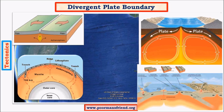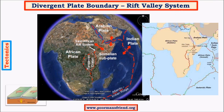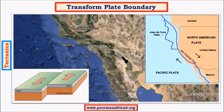We have discussed the divergent plate boundary and the formation of the African Rift Valley, in which the first stage is upwarping, then the formation of a rift, then a linear sea, and finally a mighty ocean. This is a quick recap of the previous video. The transform plate boundary's best example is the San Andreas fault in North America. Along this fault there is just a minor deformation, and since it produces only a few landforms it is not the most important type.